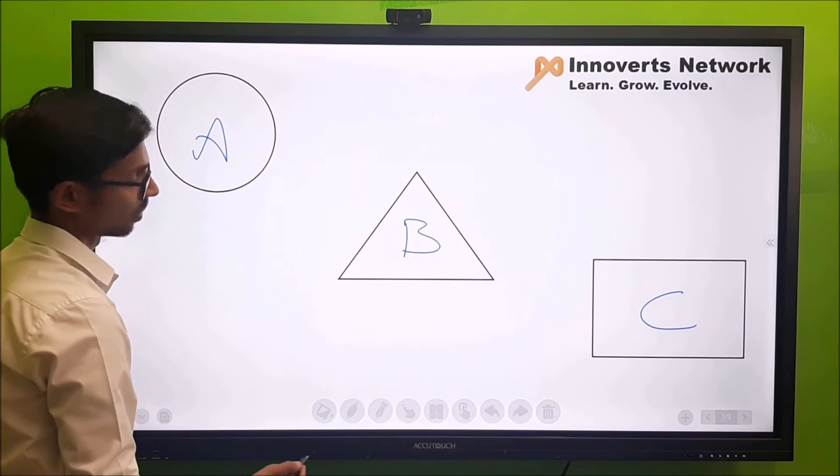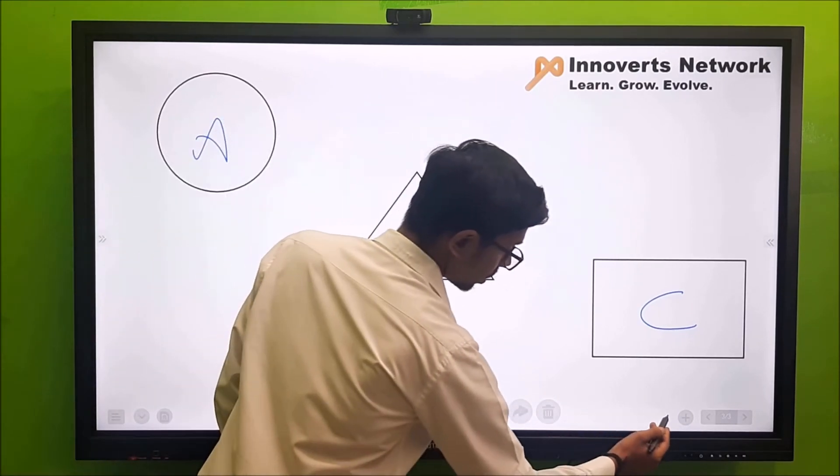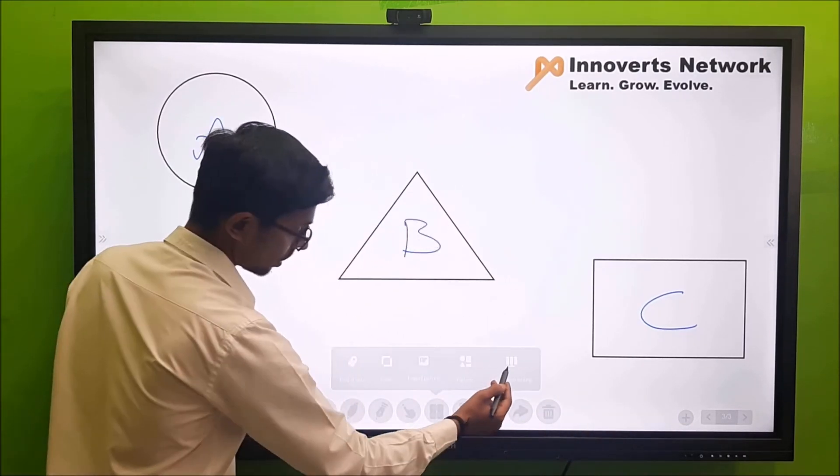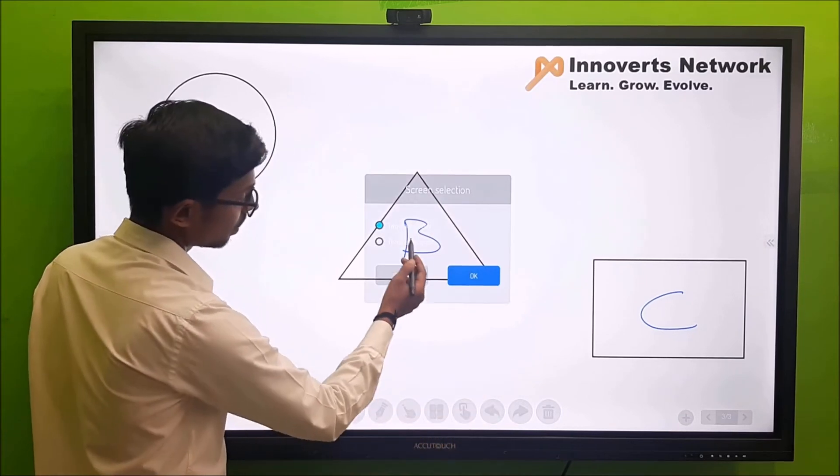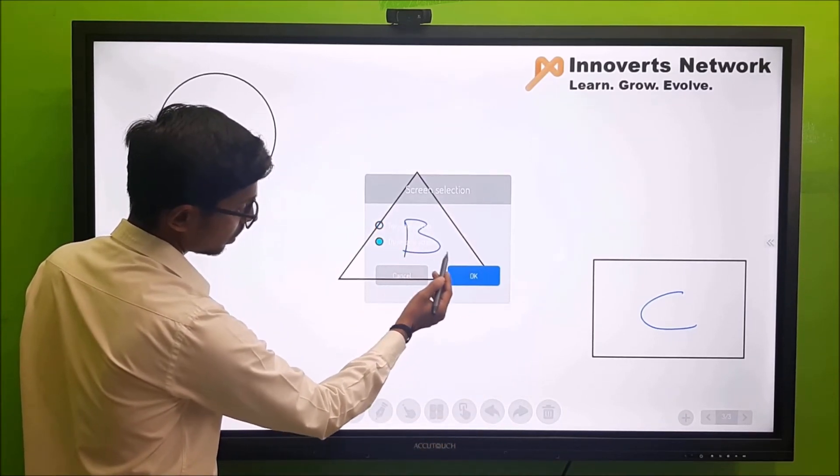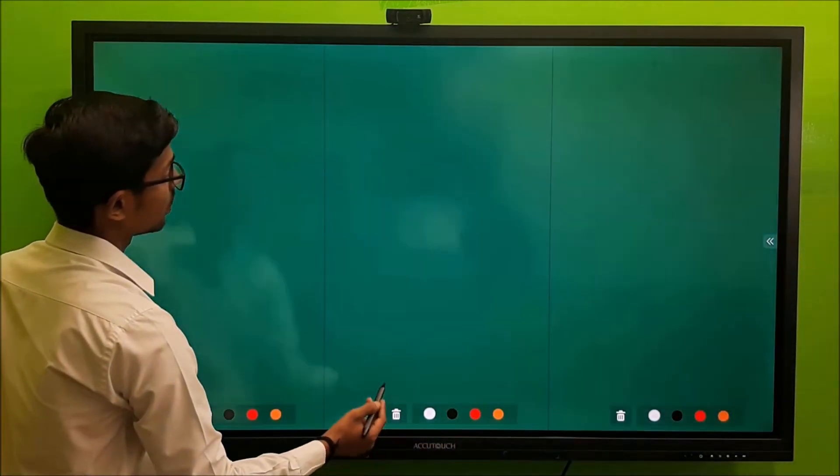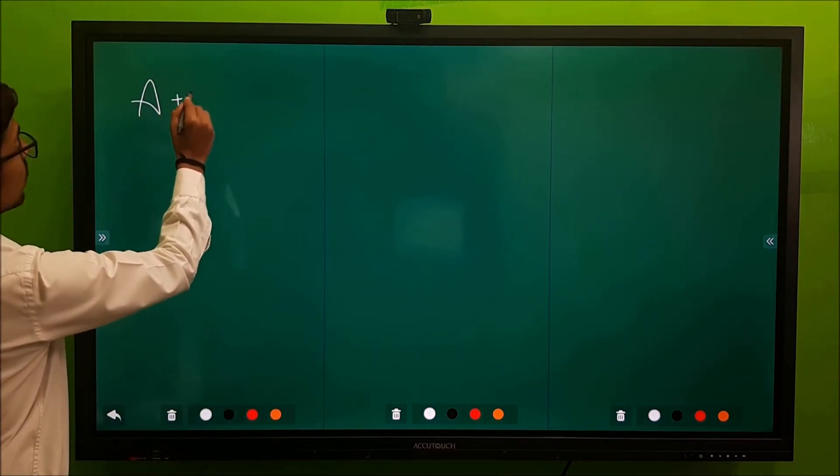Now another interactive feature with Acutouch's Accutage writing board software is its split screen option. You get an option to split the screen into two or three equal parts wherein you can bring three of your viewers to come and write different things or solve different equations on the screen.